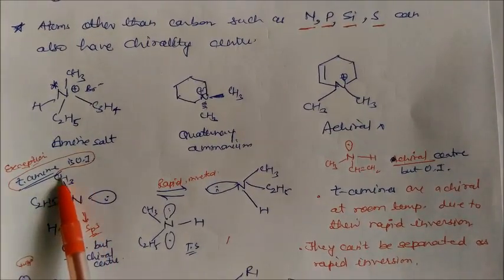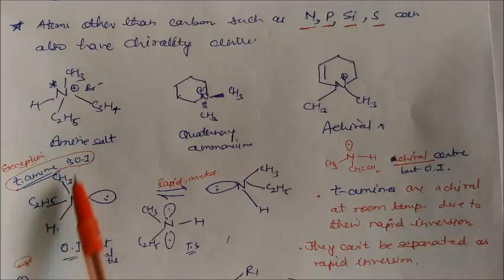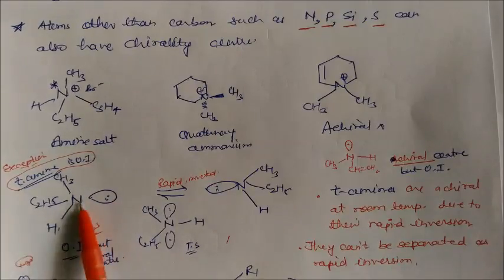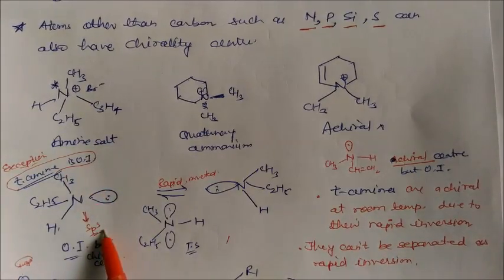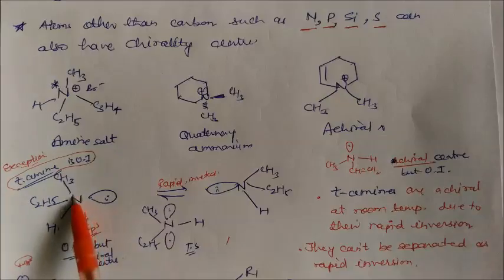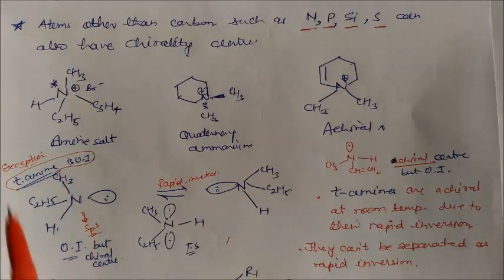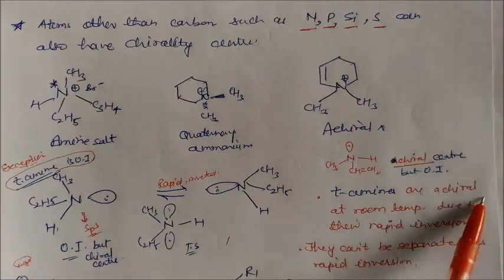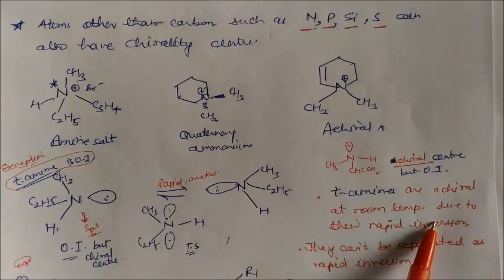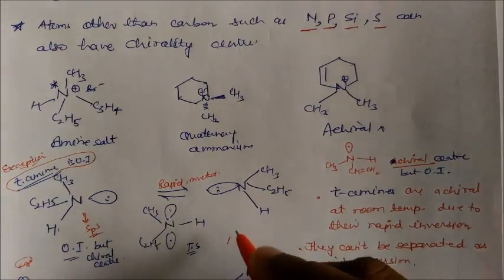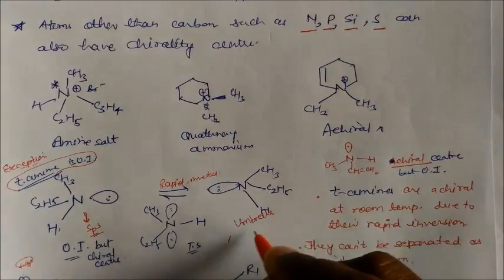Now in this case — tertiary amine. This is a tertiary amine with methyl, C2H5, and hydrogen, and we include one lone pair. This compound is optically inactive. This is sp3 hybridized and has a chiral center because the central atom has four different groups. But it is optically inactive because it undergoes inversion at room temperature immediately — tertiary amines are achiral at room temperature due to rapid inversion. This inversion is called umbrella inversion. These two compounds also cannot be separated due to rapid inversion. At the transition state, the nitrogen attains an sp2 shape.